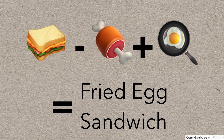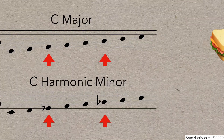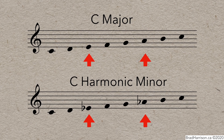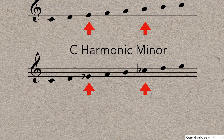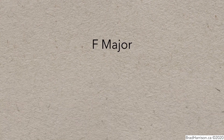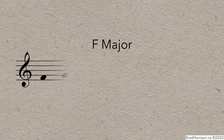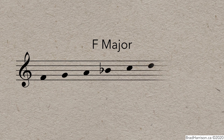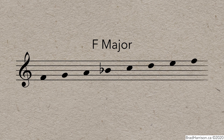So that means you can convert any major scale to harmonic minor just by lowering the 3rd and 6th. For instance, if you wanted to write F harmonic minor and you knew F major already, you could skip all that work with relative major and raising the 7th, and instead just write F major with a lowered 3rd and 6th.